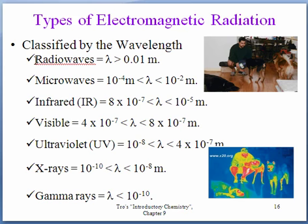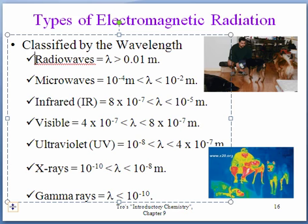We're going to start with the longest wavelength or the highest wavelength. Radio waves have wavelengths that are a centimeter high or greater. Microwaves are a little bit shorter, between 10 to the minus 4th to 10 to the minus 2, so less than a centimeter to 10 to the minus 4th meters.